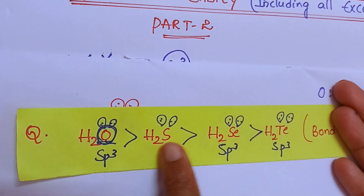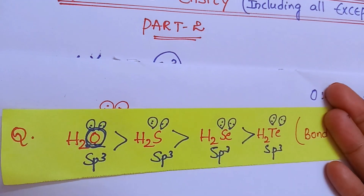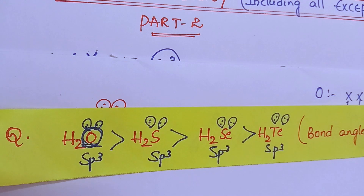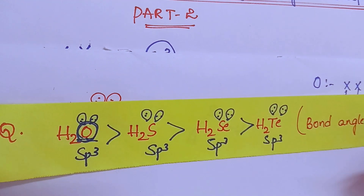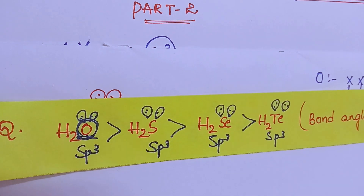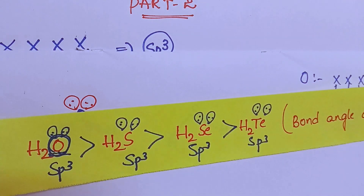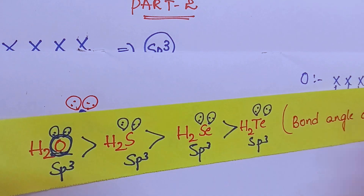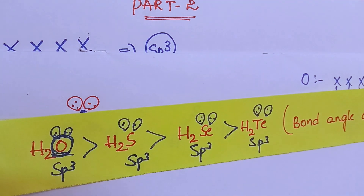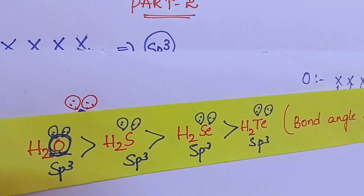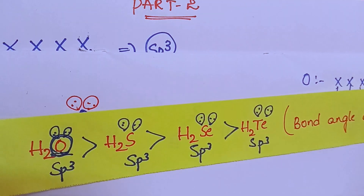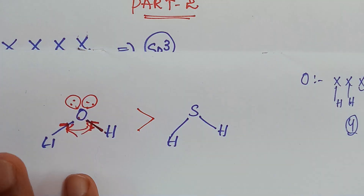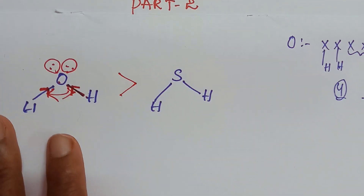If you observe, the bond angles will be almost very close — this will be explained by Drago's rule. I will make another video on Drago's rule. For now, just learning this is enough.